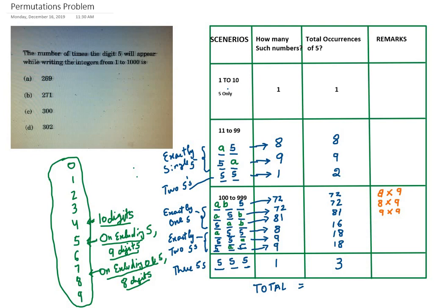First we'll try to find out how many such numbers are there, as you can see in the second column, by working on different scenarios. From 1 to 10, there is only one 5, so such numbers are 1 and total occurrences of 5 is also 1.